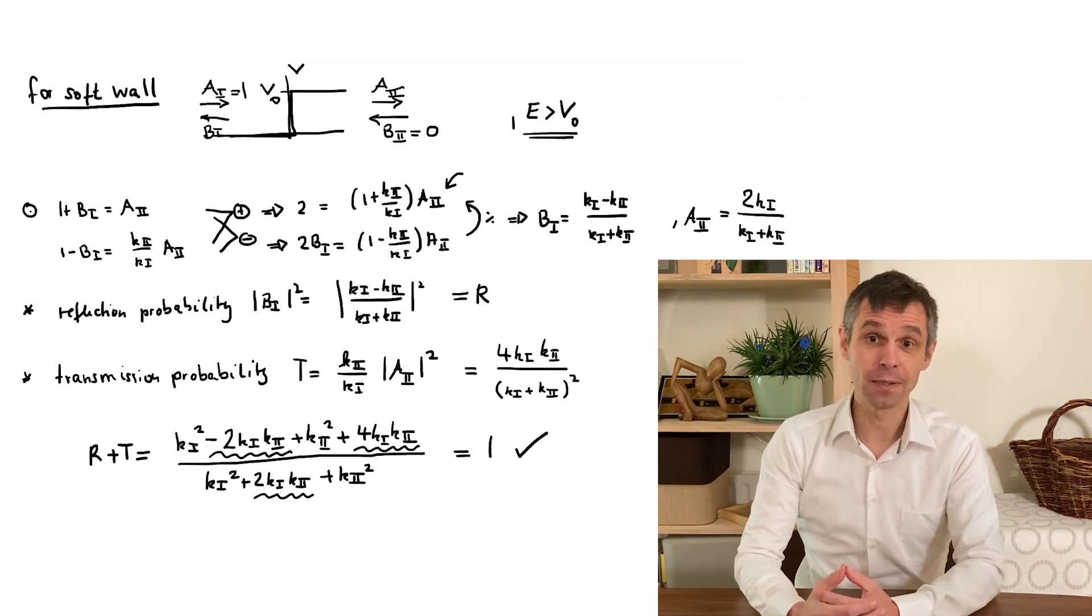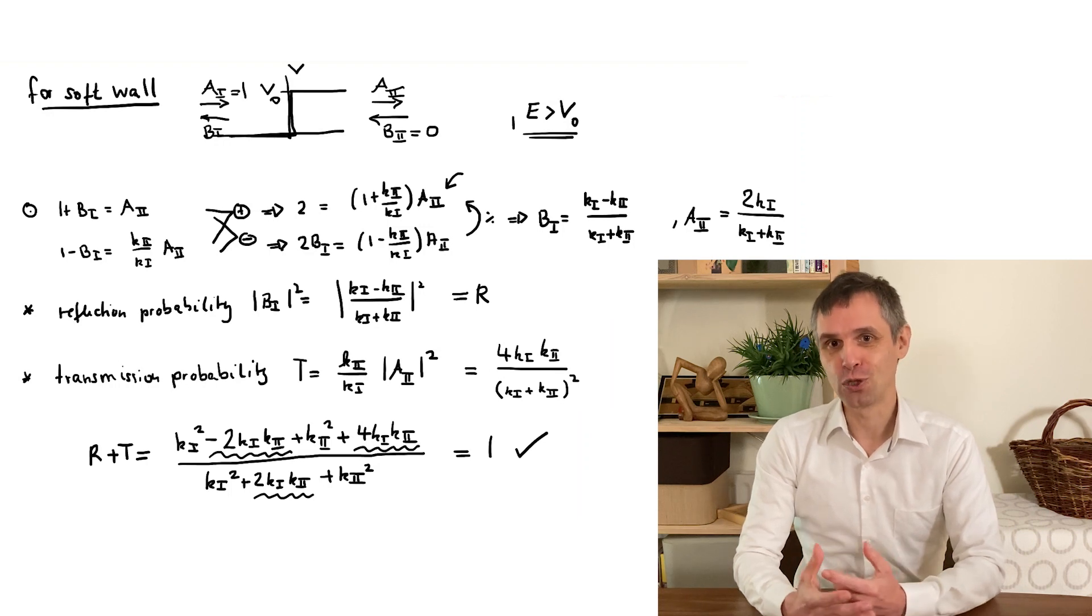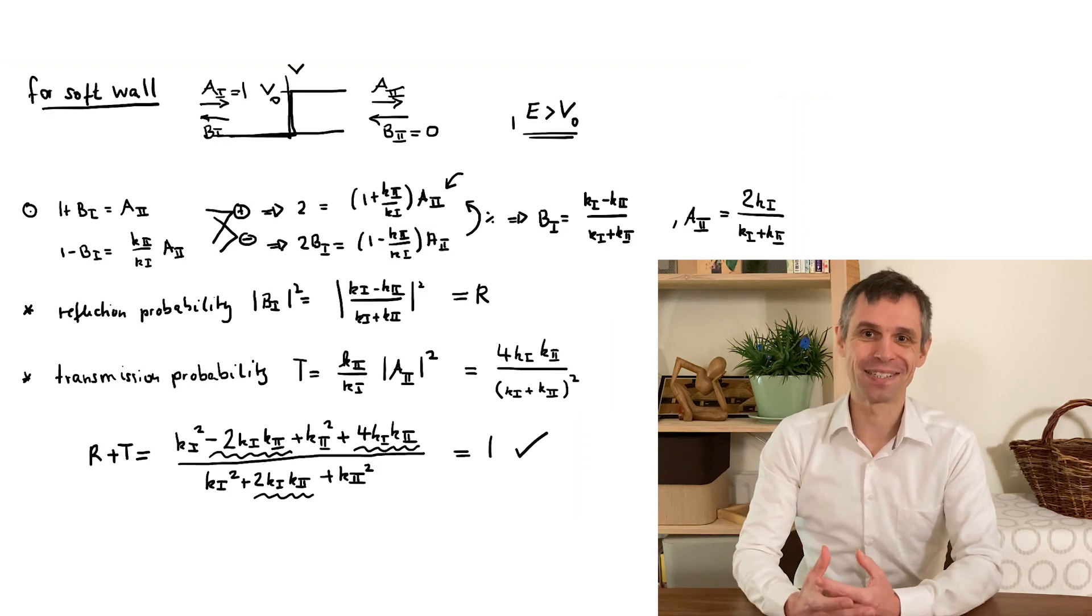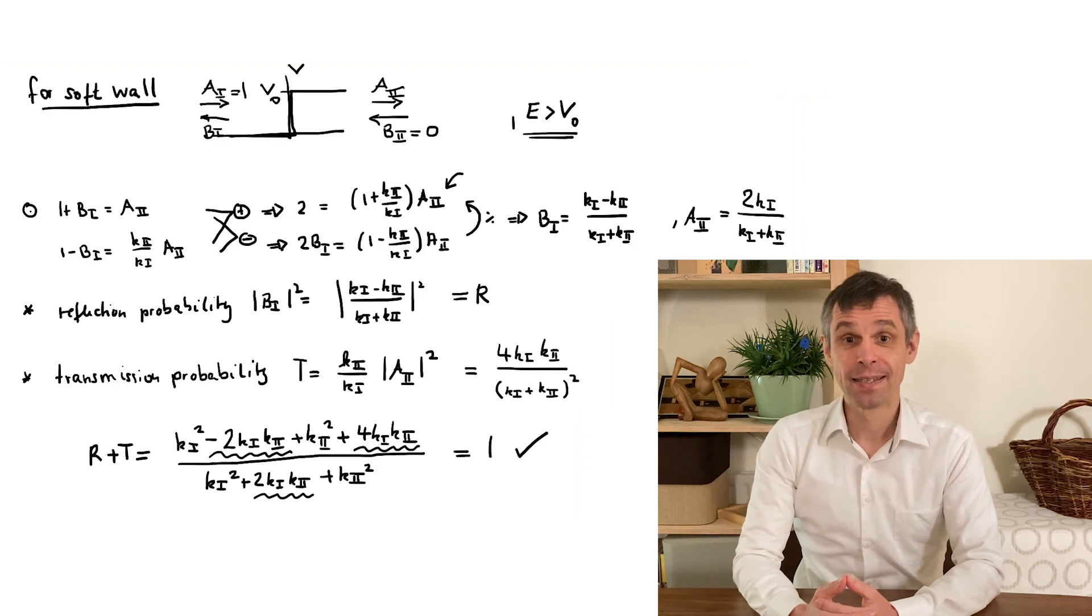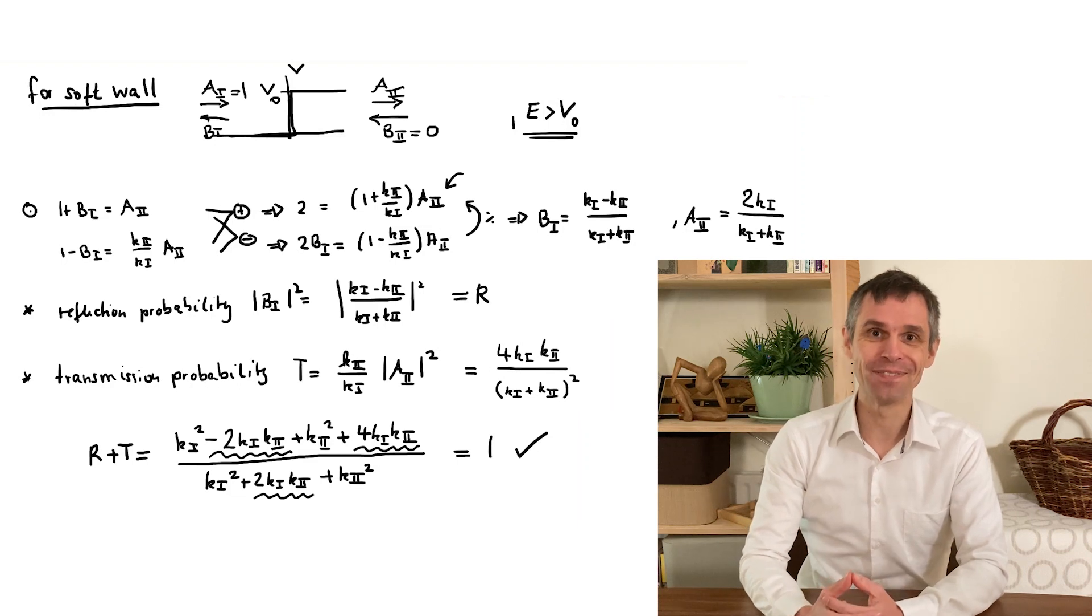For energies below the potential in the wall, we already saw that the particles always reflected. In that case, a2 does not describe transmission, but tunneling into the classically forbidden region. Indeed, if you work out the probability flux for the real exponential in place of the plane wave, then it vanishes.